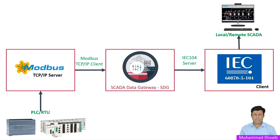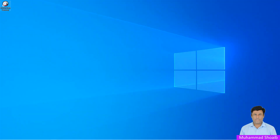In this setup, our RTU will work as a Modbus TCP server, and the SCADA Data Gateway will work as a Modbus TCP client. It will fetch data from the RTU, PLC, or DCS system. On the other end, our SCADA Data Gateway works as an IEC 104 server, and our SCADA system will work as an IEC 104 client. Let's see how we can configure the SCADA Data Gateway for this use case.